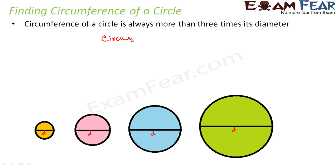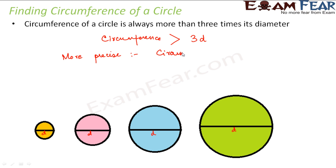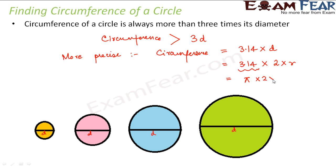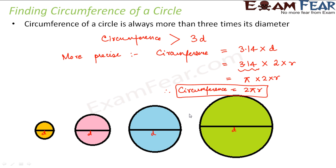So circumference is always slightly more than three times the diameter — that is, C > 3D. To be more precise and accurate, the circumference is actually equal to 3.14 times the diameter of the circle. Now the diameter is nothing but two times the radius, so that gives us 3.14 × 2R. This value 3.14 is roughly the value of pi — pi's value is considered as 22/7 or 3.14. Therefore, circumference of a circle equals 2πR. If we know the radius, we can find the circumference. This is how we arrived at a generalized formula.